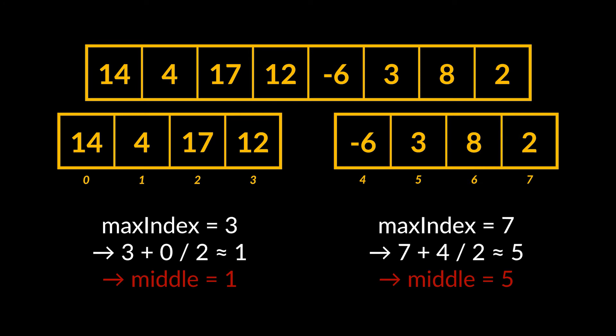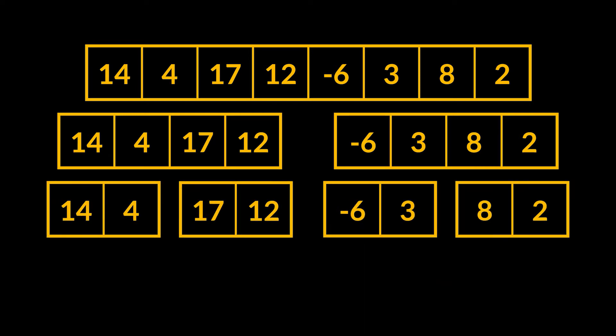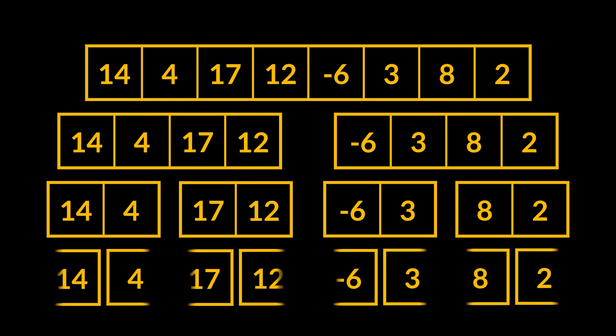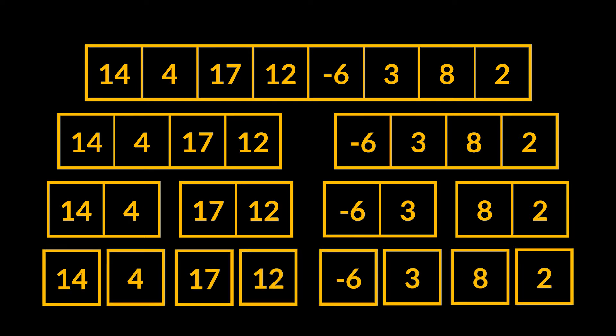Now every subarray will be divided into two new subarrays, each storing two elements. At this point we have four subarrays in total, but each stores two elements instead of one, which is our ultimate goal for the divide step. This means we have to do one last division, splitting each of these subarrays into single elements. Now we can say that the divide step is complete.